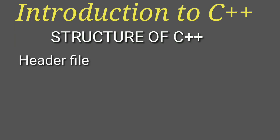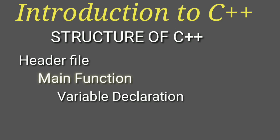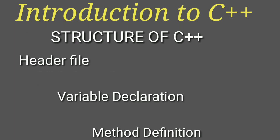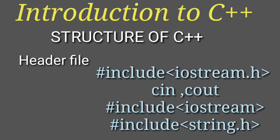Now let's look at the structure of C++. This is the way to define your program: first define the header file, then the main function, then variable declaration, then method definition. If you are going with an object-oriented programming concept, just interchange the main function and class declaration.